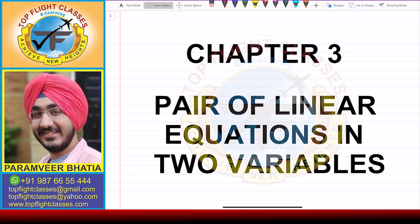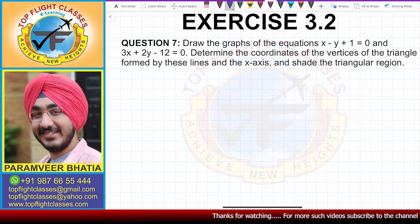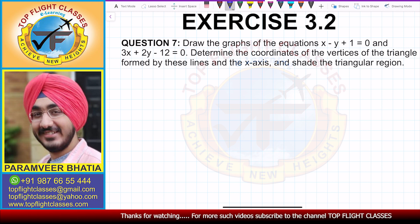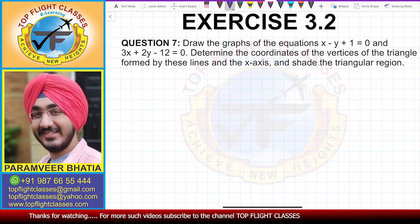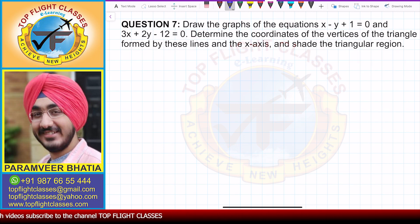Hey guys, welcome to my channel Top Flight Classes. In this video we'll cover question number seven of exercise 3.2. The question says: draw the graphs of the equations x minus y plus 1 equal to 0 and 3x plus 2y minus 12 equal to 0, determine the coordinates of the vertices of the triangle formed by these lines and the x-axis, and shade the triangular region.